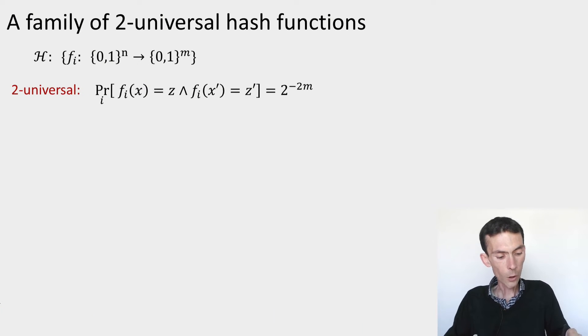It should be the case that for every z and z prime in the range of the hash functions and for any x and x prime in the domain that are different, so for every x different from x prime...